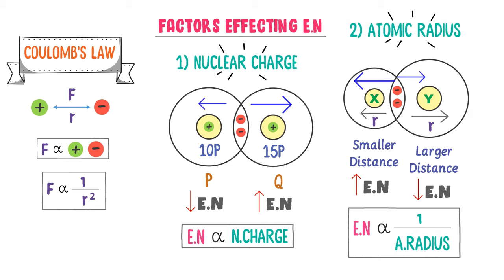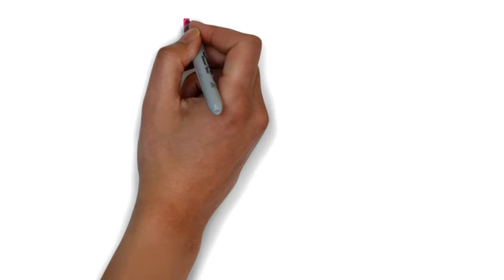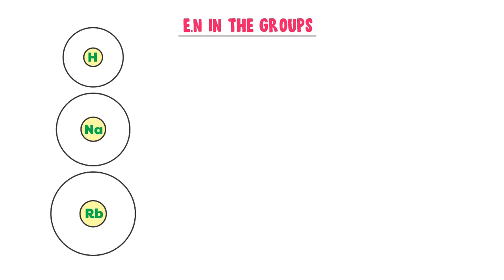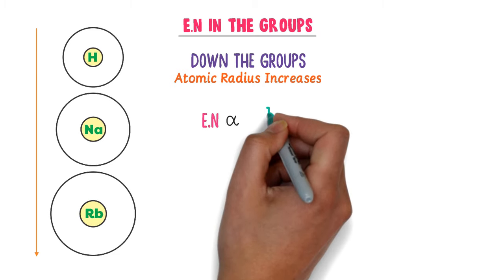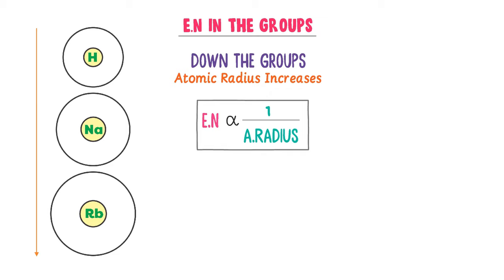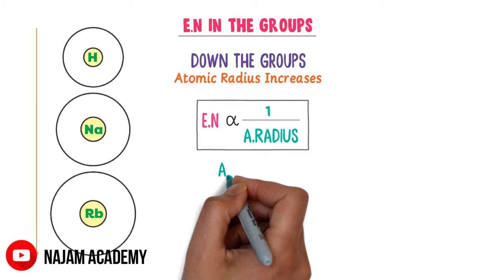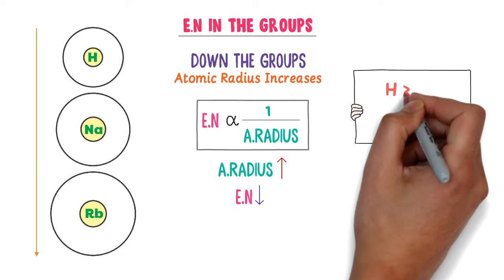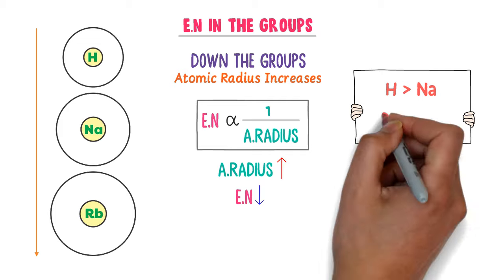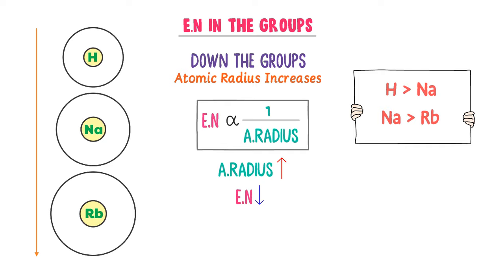Now let me teach you the trends of electronegativity in the periodic table — electronegativity down the groups. Consider the elements of the first group of the periodic table. When we move from top to bottom down the group, atomic radius increases. Since electronegativity is inversely proportional to atomic radius, electronegativity decreases down the group. This means hydrogen is more electronegative than sodium, while sodium is more electronegative than rubidium. Note it down: electronegativity decreases down the group.